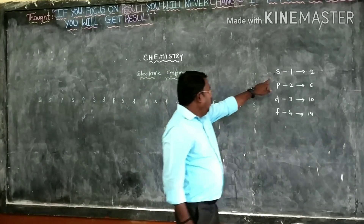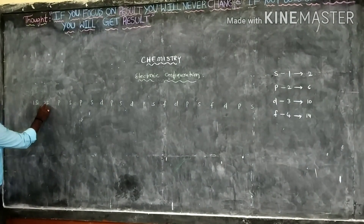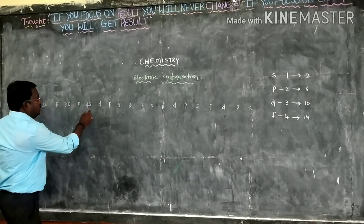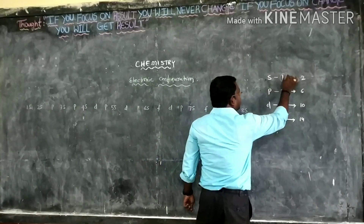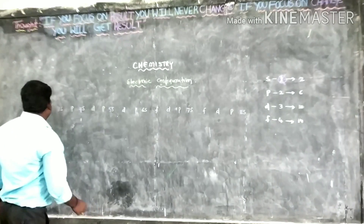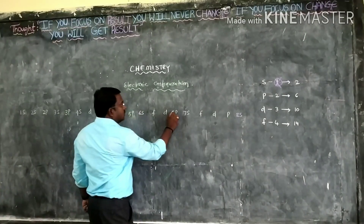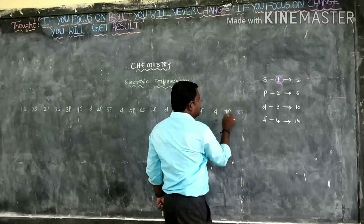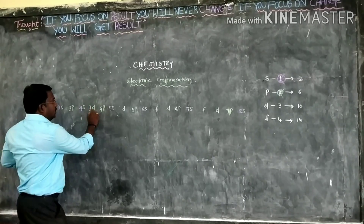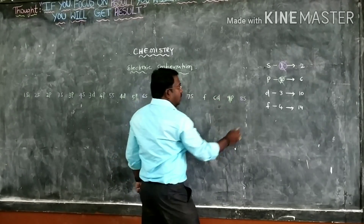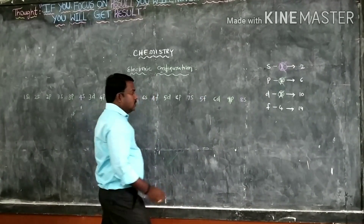Now coming to point C. The serial number of S orbital is one, so you start from here. This is one, two, three, four, five, six, seven, eight. Then we start from three: three, four, five, six. Then you start from four: four, five. So this sequence is also complete.